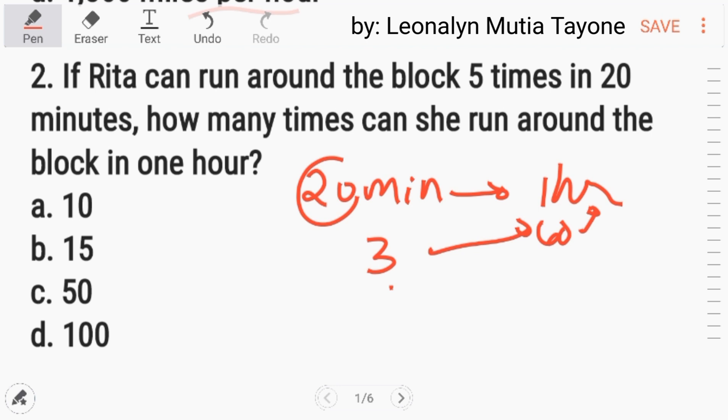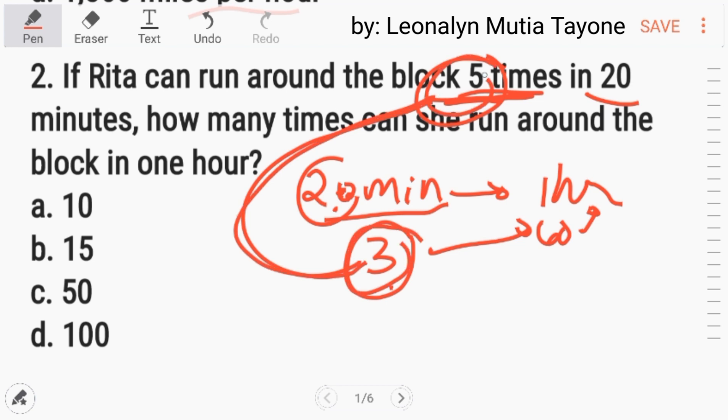Kasi 20 times 3 and that is 60 minutes or 1 hour. So tatlong tag 20 minutes in 1 hour. Itong 3, i-multiply mo sa 5 kasi if Rita can run around the block for 5 times in 20 minutes. So kung tatlong 20 minutes, i-multiply mo lang itong tatlo dito sa 5. 5 times 3 equals 15. So, the answer is B.